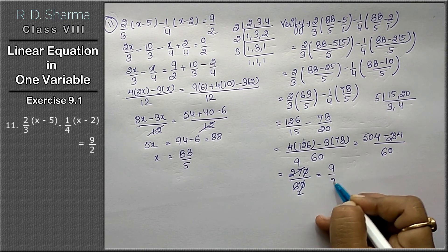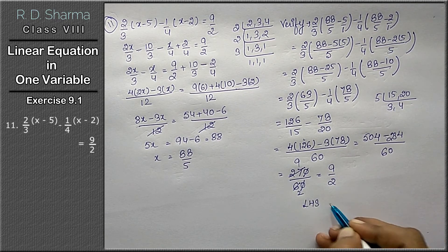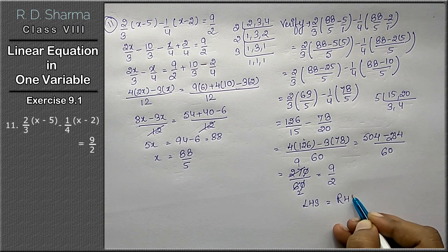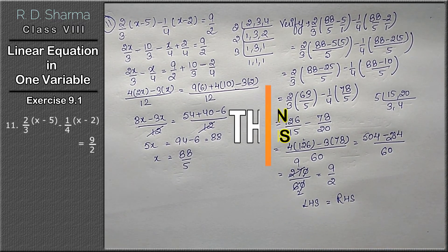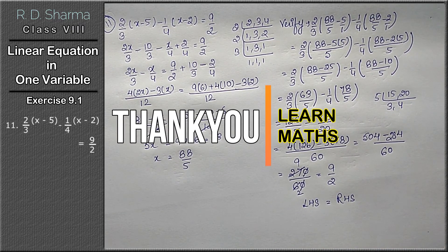9 upon 2 is the answer. That means left hand side is equal to right hand side. Thank you. If you like my video please subscribe and please don't forget to press the bell icon to get the latest video updates. Thank you.